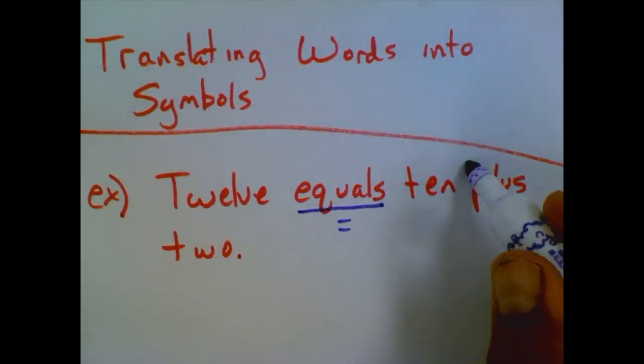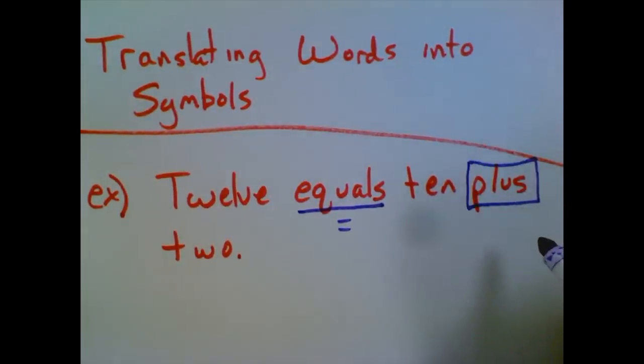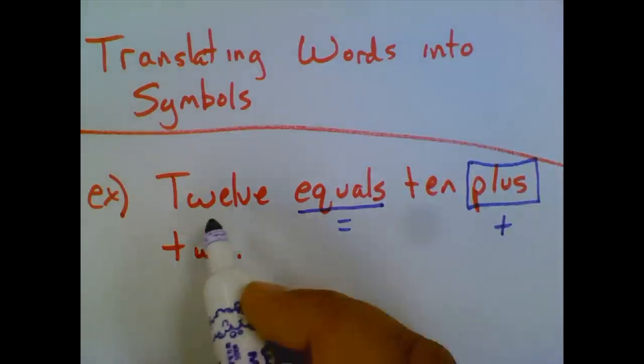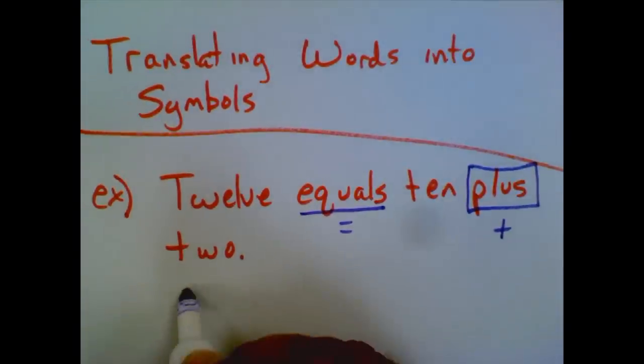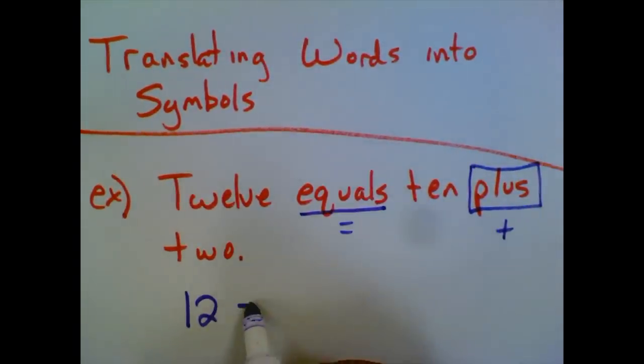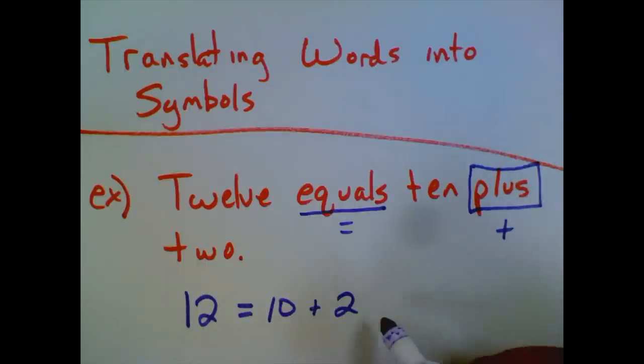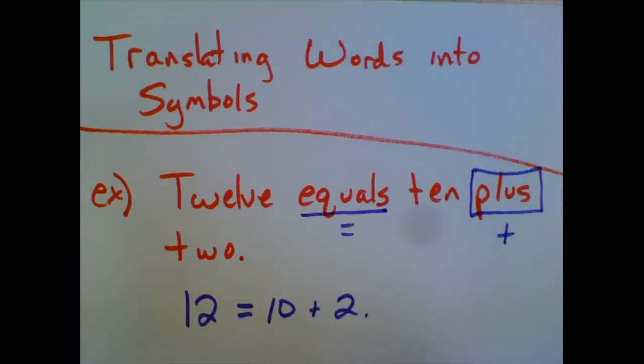Here's another key word. Plus means addition, right? So if we just translate the numbers, 12 equals 10 plus 2. Okay, pretty straightforward example.